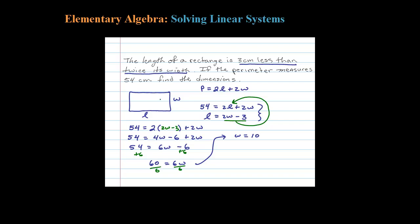Once we know W is 10 centimeters, we need to figure out the length by back-substituting. Using the second equation, the length is 2 times the width minus 3. The width is 10, so L equals 2 times 10 minus 3, which is 20 minus 3, equals 17. The dimensions are 10 by 17 centimeters.